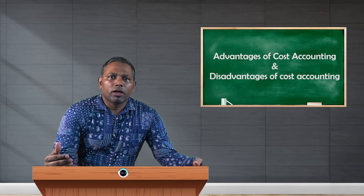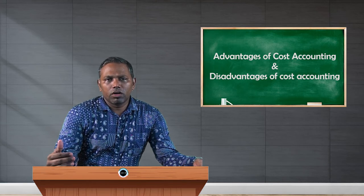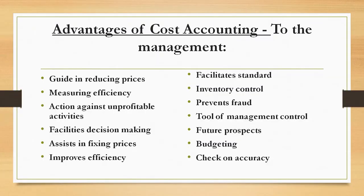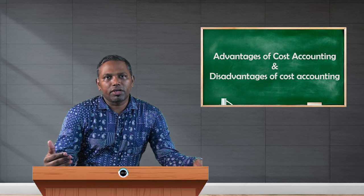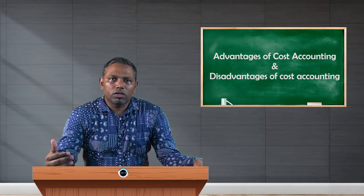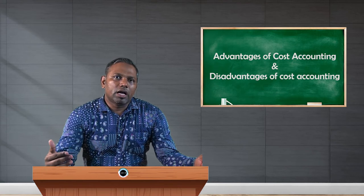Controlling abnormal losses will help the company maximize profit. The cost accounting system is always future-oriented and helps the management to have proper budgeting, which is one of the important aspects for any company. At the same time, it helps to ensure accuracy and check on what is recorded in the system.